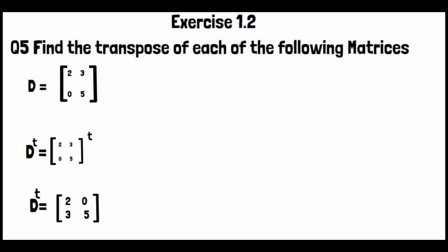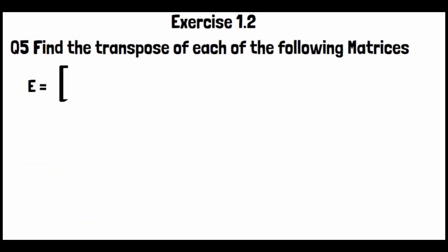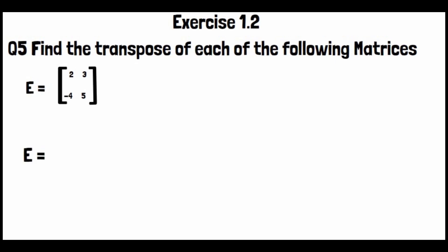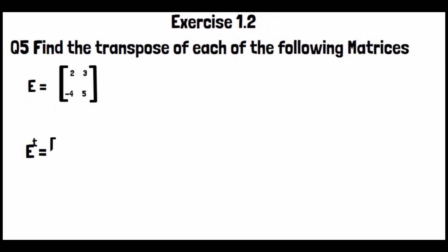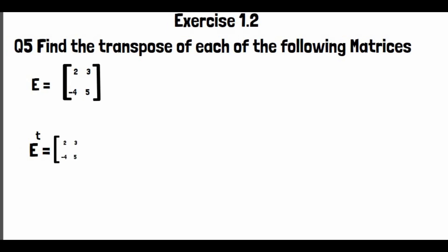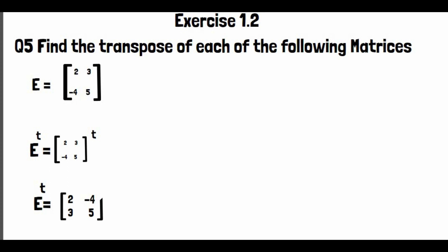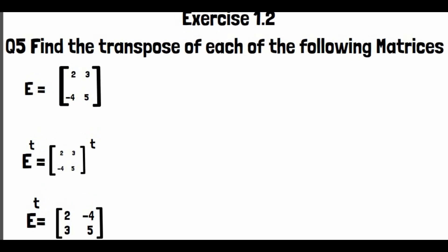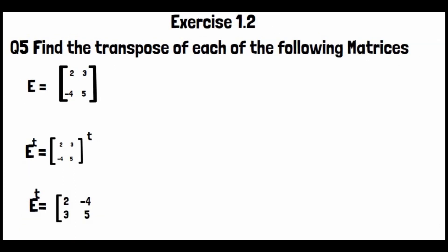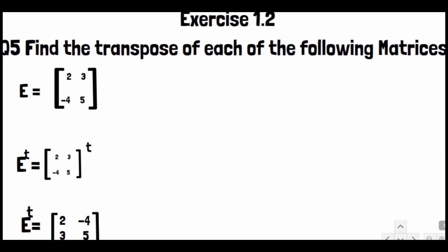Matrix E has entries [2, 3; -4, 5] with two columns. To find E transpose, we convert columns to rows. E^T equals [2, -4; 3, 5].